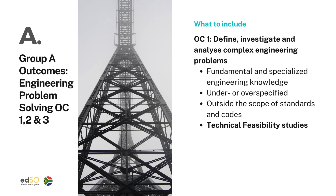In Outcome 1, you're expected to define, investigate, and analyze complex engineering problems. This outcome is concerned with the understanding and judgment of a problem. These problems can either be over or underspecified, where you need to go out of your way to find the right information to make sure that you're solving the right problem. You can find that information based off of a literature review, a desktop study, or even going out on site looking for information to inform the solution that you're trying to put together.